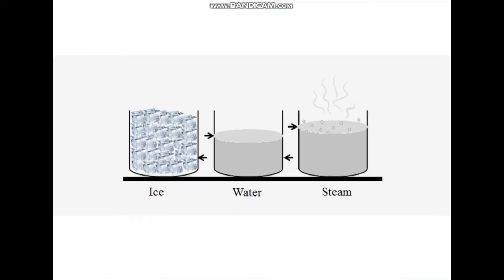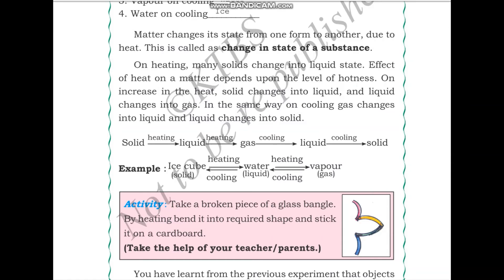In this picture we can see this part by part. First we have ice — when we supply it with heat it becomes water. When we heat water it becomes steam or water vapor. Changes its state from one form to another due to heat. This is called change in the state of a substance. There are three states of matter: solid, liquid, and gas. When heating a solid it becomes liquid; when heating liquid it becomes gas.